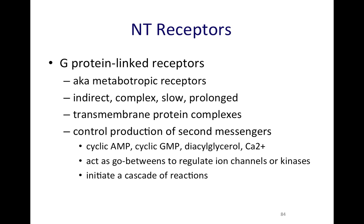You see these transmembrane protein complexes — many different proteins come together with these types of receptors. Another thing that these receptors are responsible for is to control production of various second messengers. Cyclic AMP is one of the main ones we'll be looking at, but there are others as well, such as calcium.